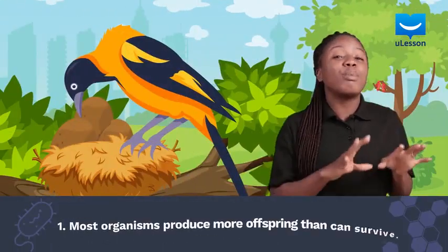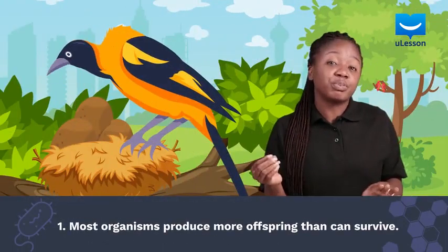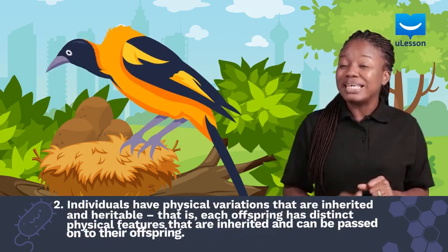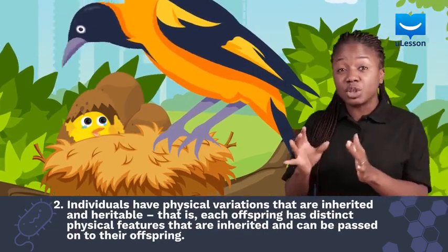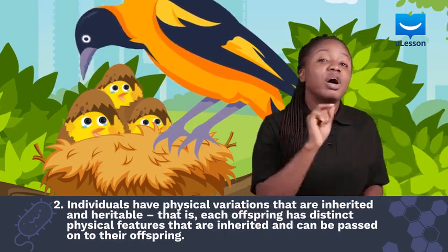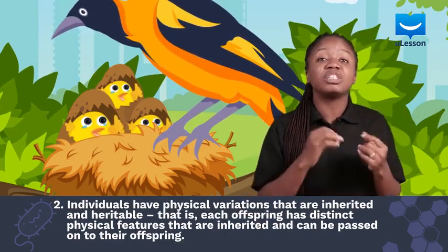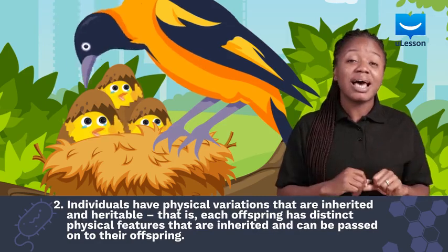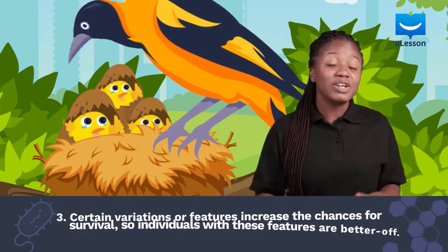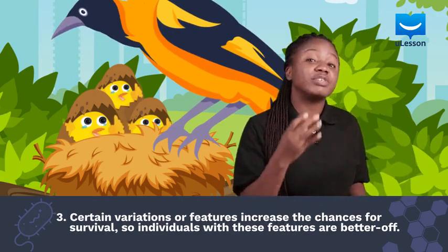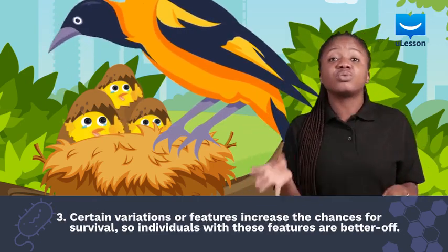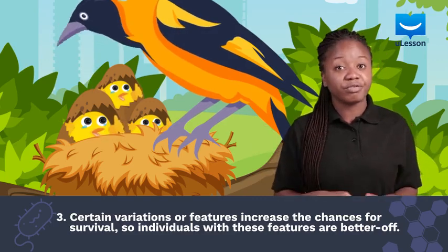One: most organisms produce more offspring than can survive. Two: individuals have physical variations that are inherited and heritable — that is, each offspring has unique physical features that are inherited and can be passed on to their offspring. Three: certain variations or qualities made it easy to survive, so individuals with these qualities were better off.